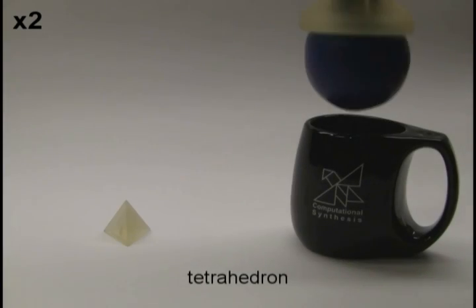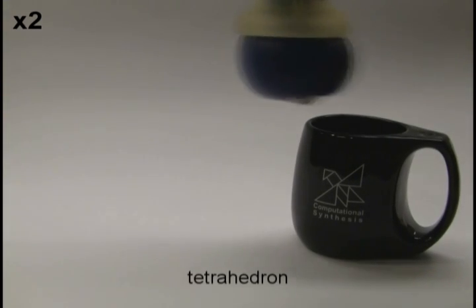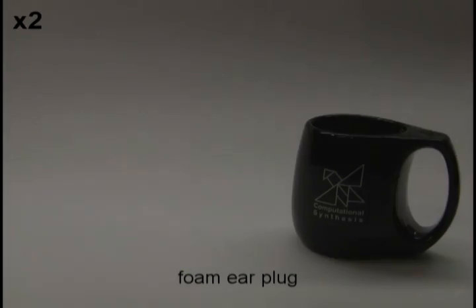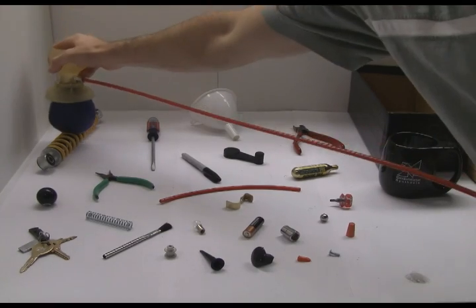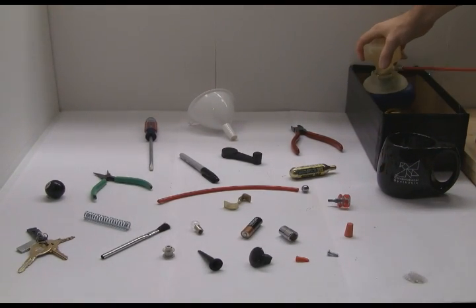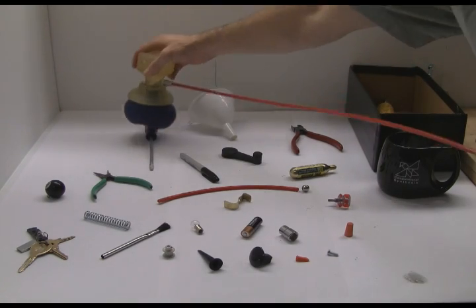The term universal refers to the wide variety of items that our gripper can pick up. Initially, the gripper is in the soft state, and it deforms around the object it is pressed against. Then we apply a vacuum to evacuate the air from inside of the gripper and induce the rigid state.